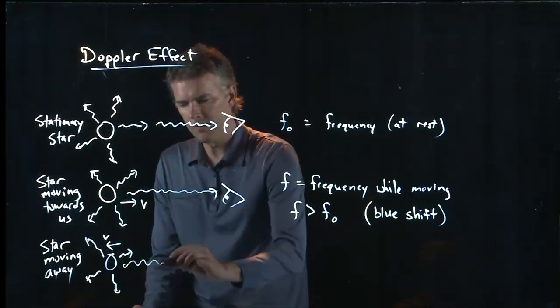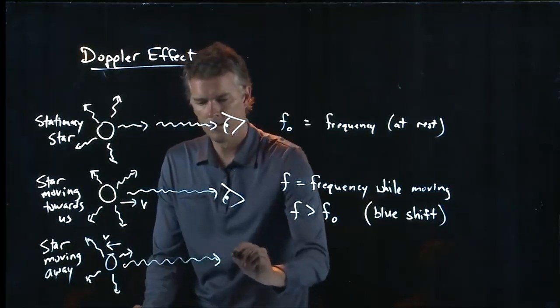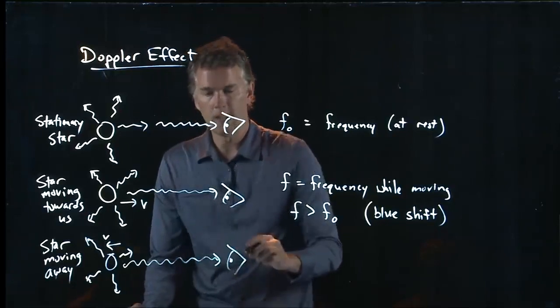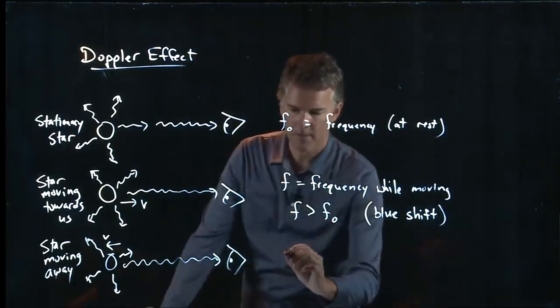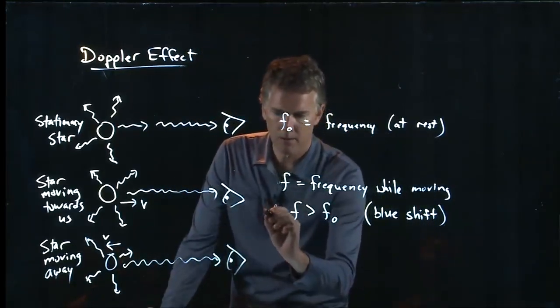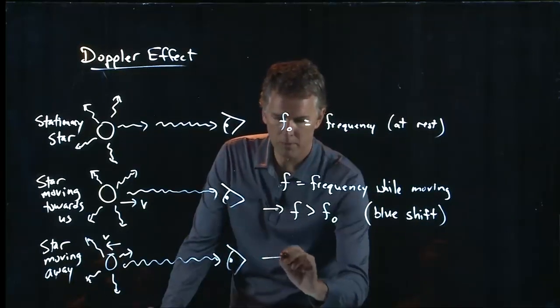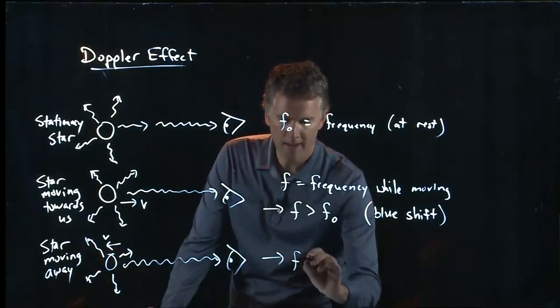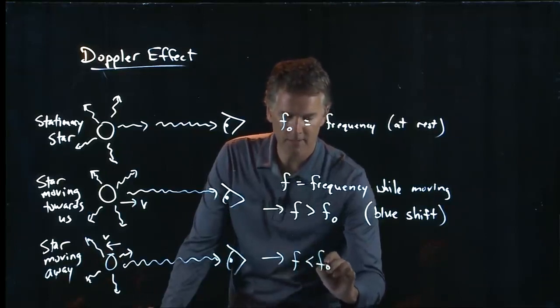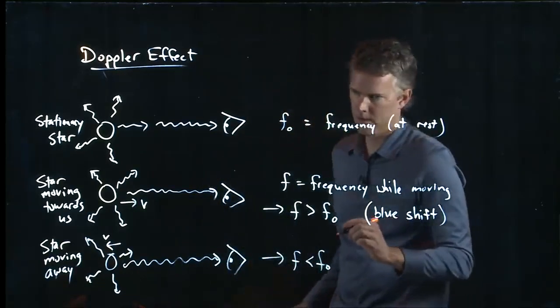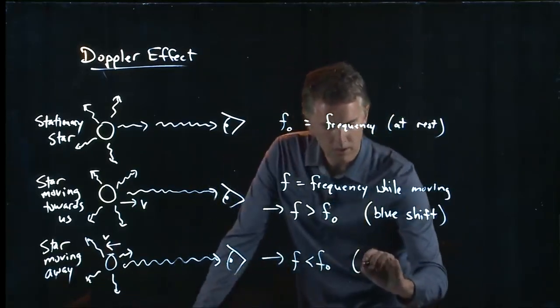And when that light gets to us, it in fact is shifted the other way. In this case, so that was moving towards us, this is moving away. We have F is in fact less than F naught. And that's called a redshift.